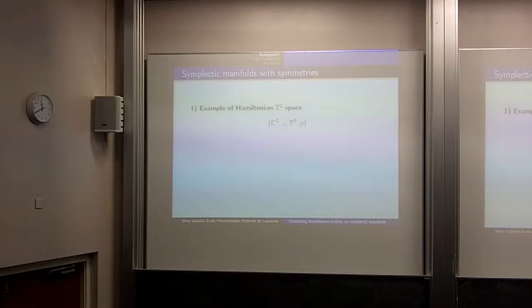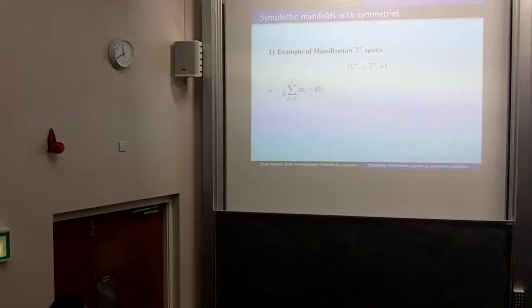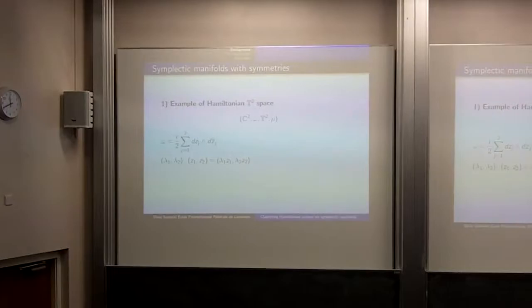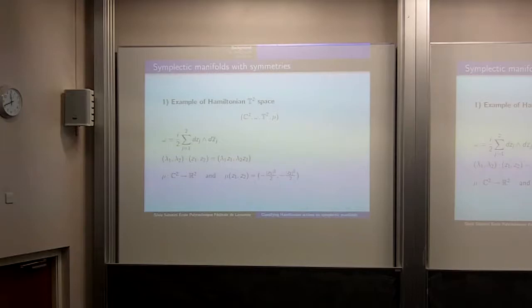The second example is ℂ² with symplectic form (i/2)(dz₁ ∧ dz̄₁ + dz₂ ∧ dz̄₂), which identified with ℝ⁴ is precisely ω₀. The T² action has (λ₁, λ₂) acting on (z₁, z₂) by (λ₁z₁, λ₂z₂) — rotating in each complex plane. This action is Hamiltonian with moment map μ(z₁, z₂) = (−|z₁|²/2, −|z₂|²/2). The image of ℂ² through the moment map is the negative quadrant in ℝ².